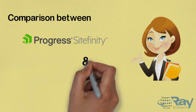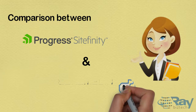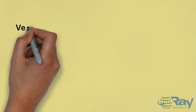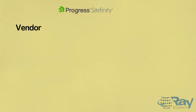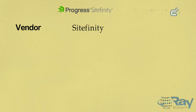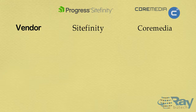Comparison between Progress Identity and CoreMedia. The vendor for Progress Identity is SiteMedia and for CoreMedia it's CoreMedia.